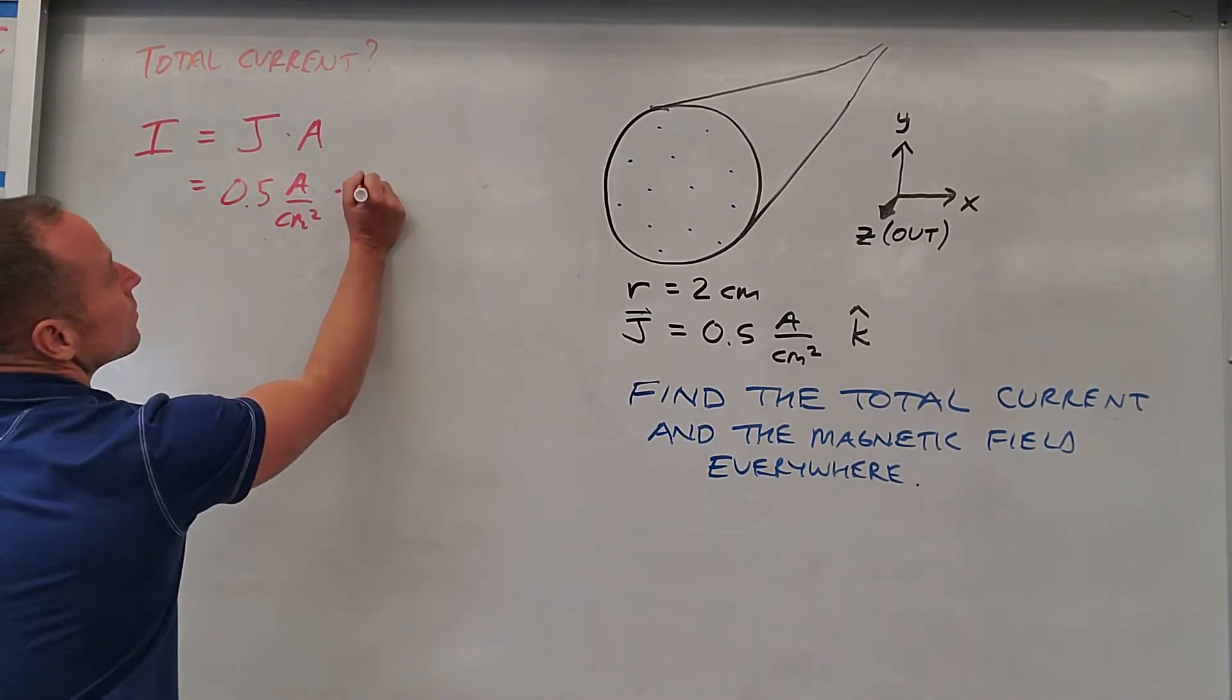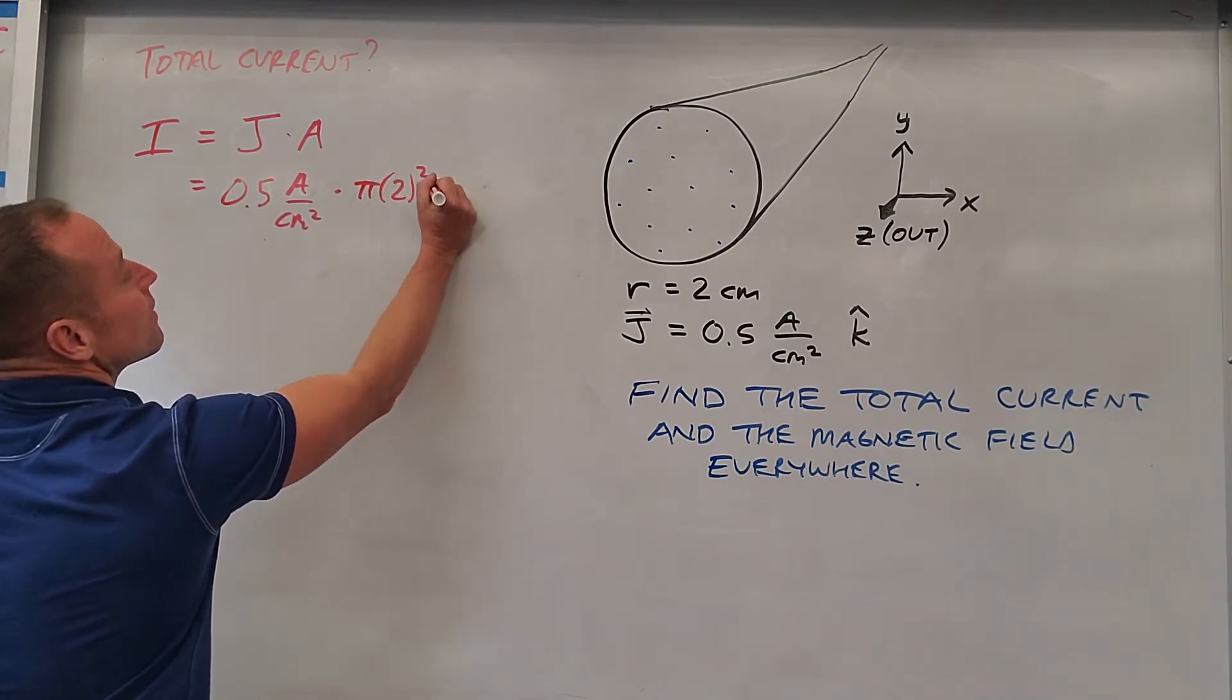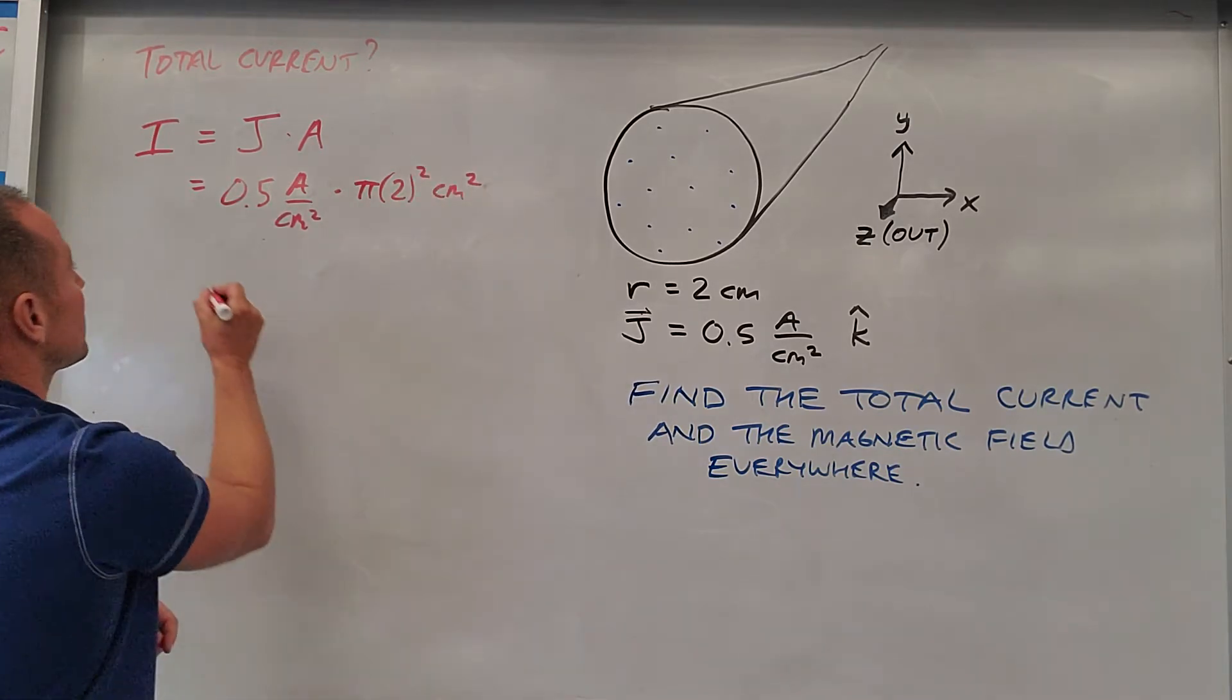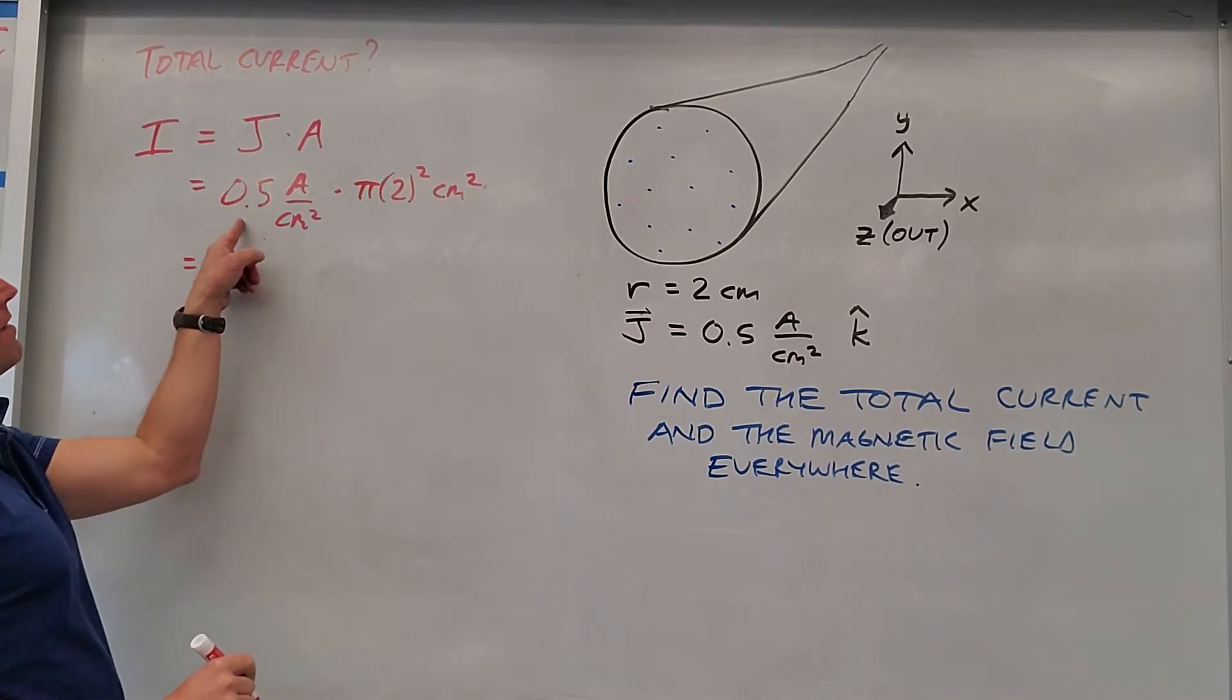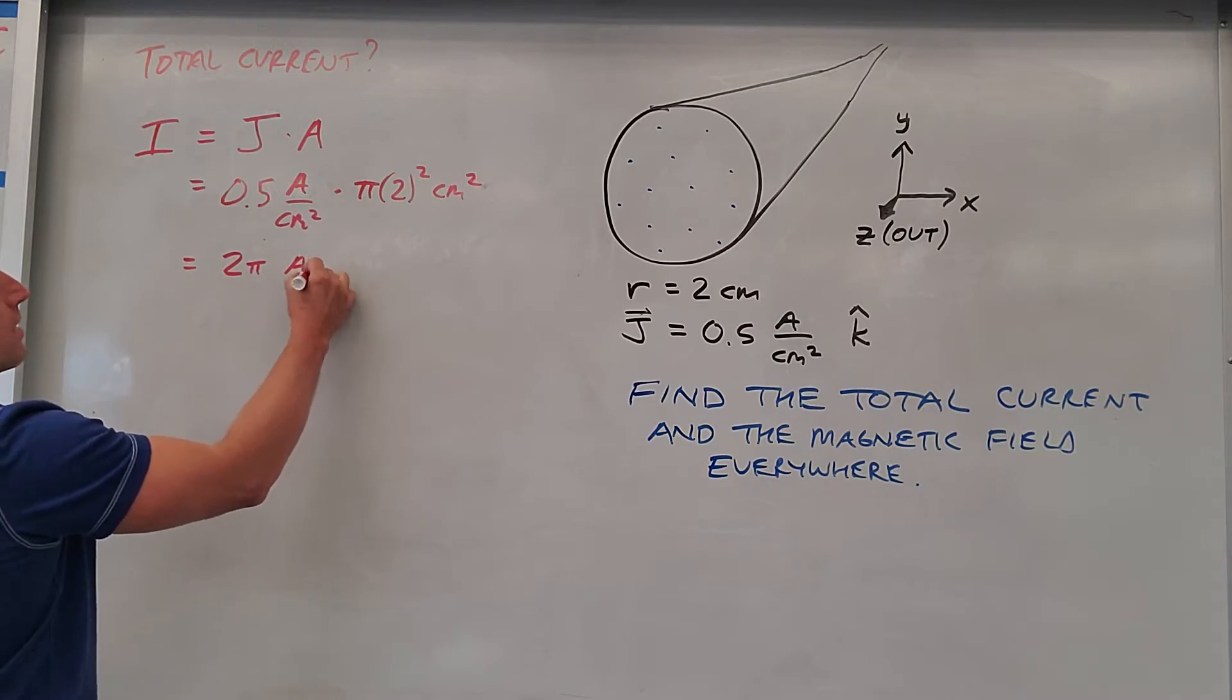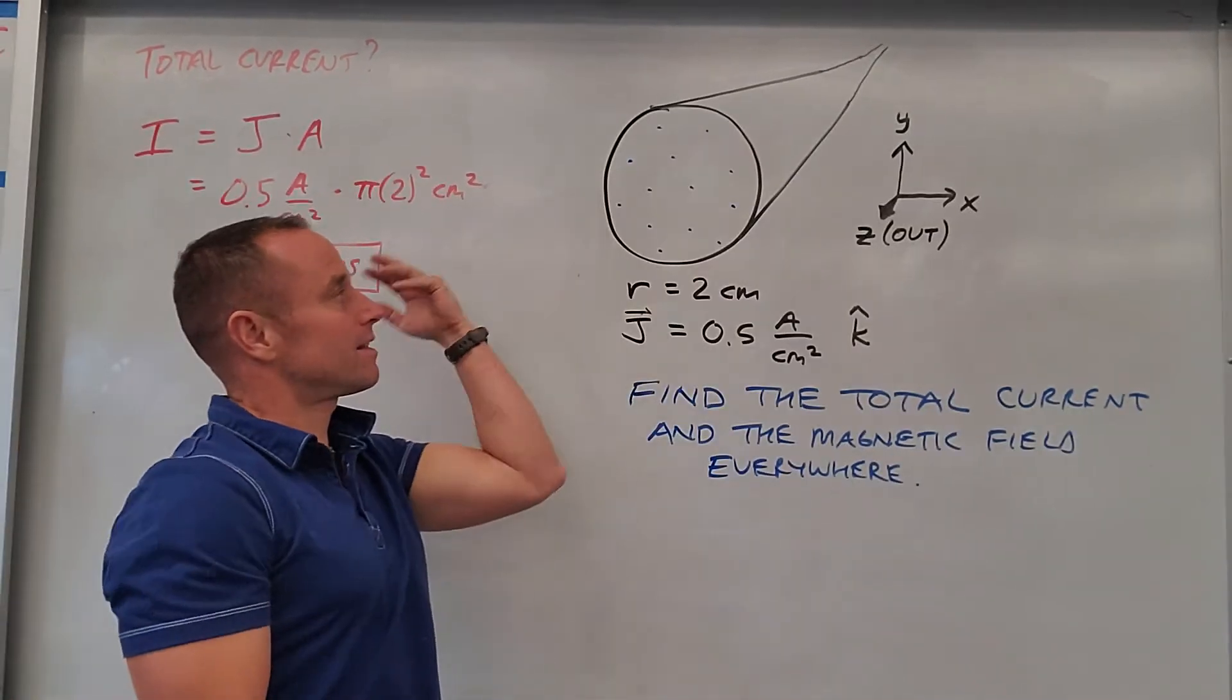and then times - the radius is 2 centimeters - so it's going to be πr². So π times 2 squared in units of centimeters squared. 2 squared is 4, half of that is 2, so it's going to be 2π amperes.